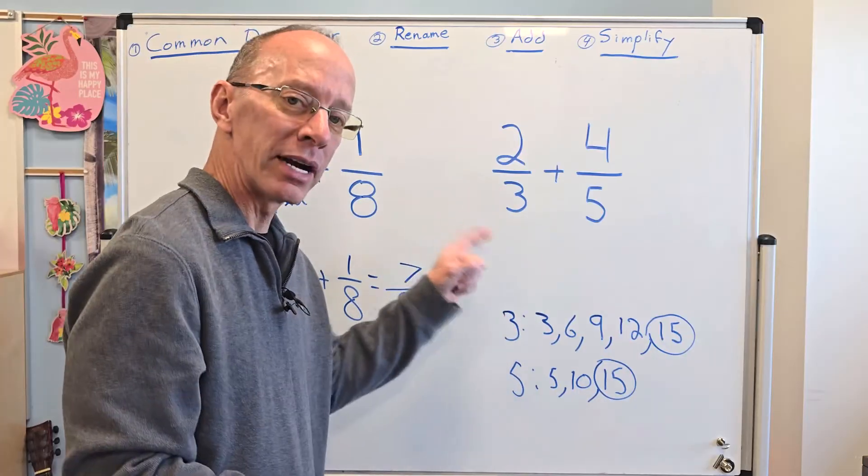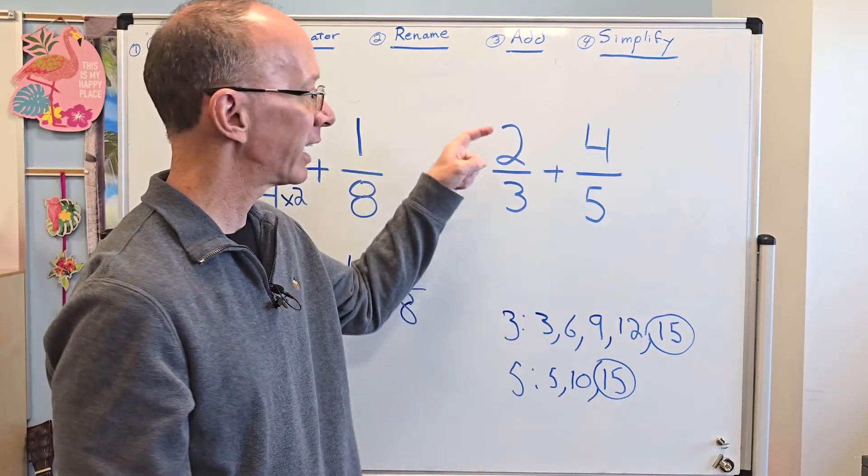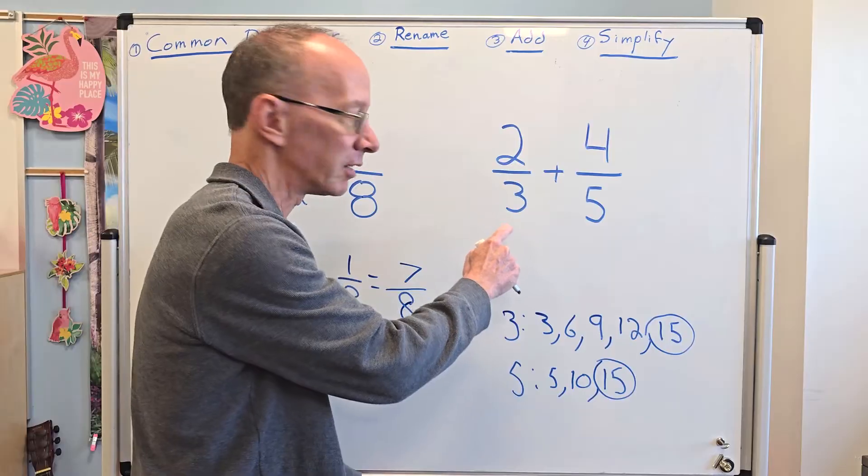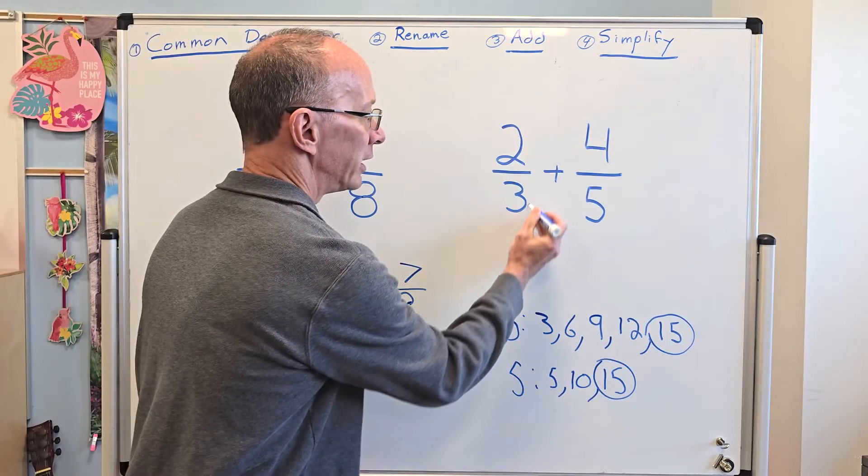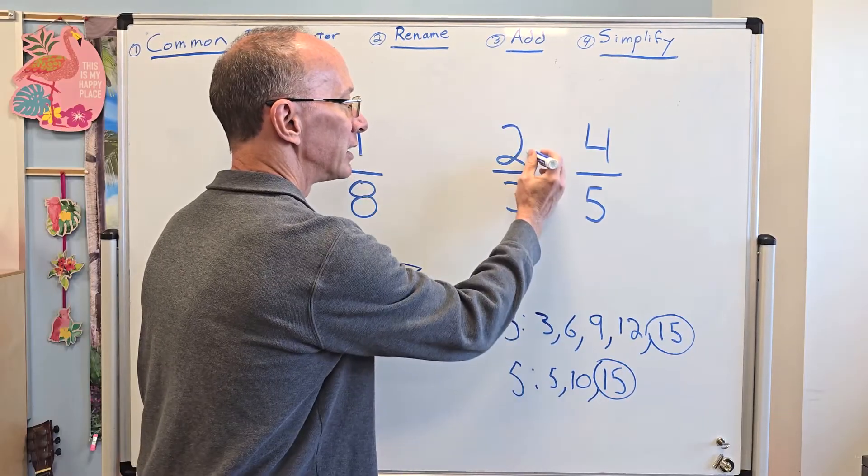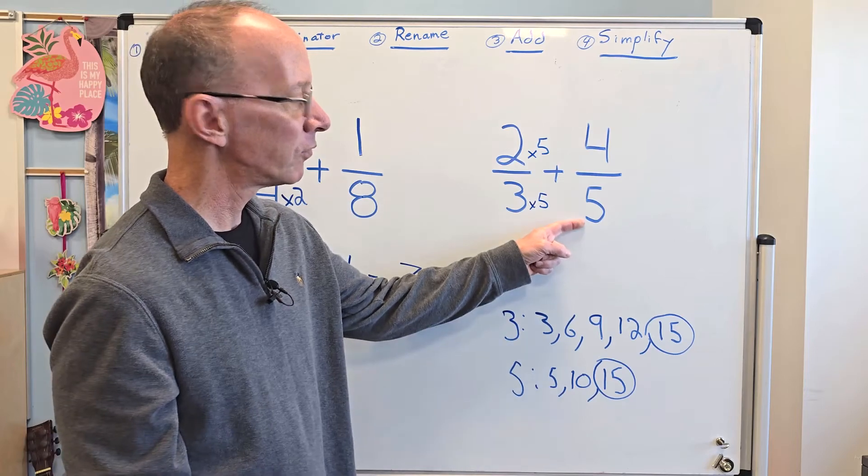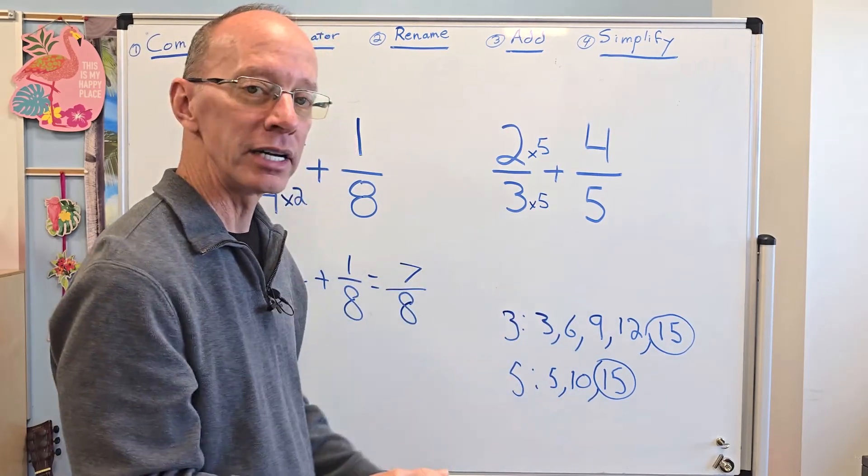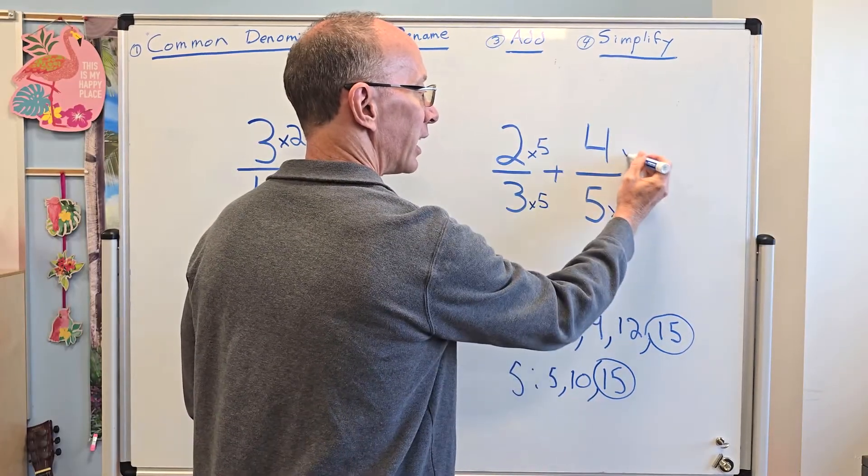So now I need to rewrite this problem. Remember, whatever I do down here, I need to do the exact thing up here. So I need to get to 15, right? So three times what equals 15? Five. So I need to do a times five here and a times five here. Over on this side, five times what equals 15? Five times three. So I need to do a times three here and a times three here.